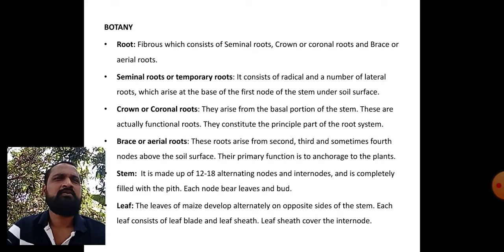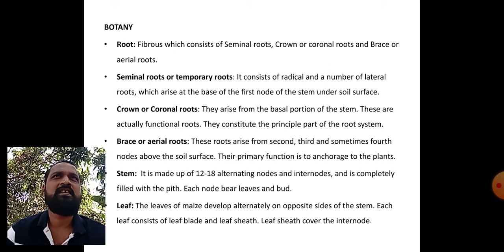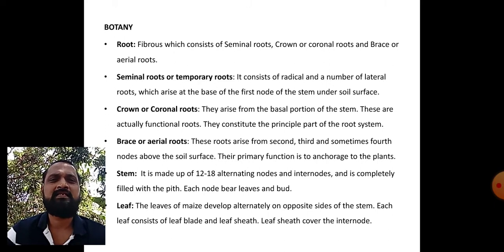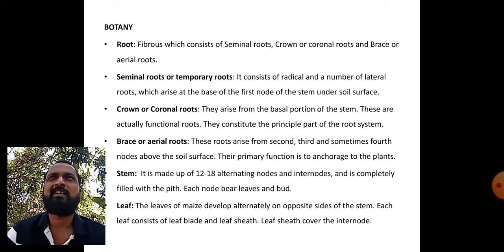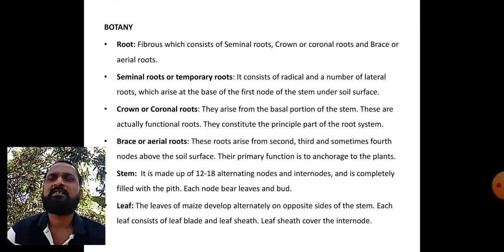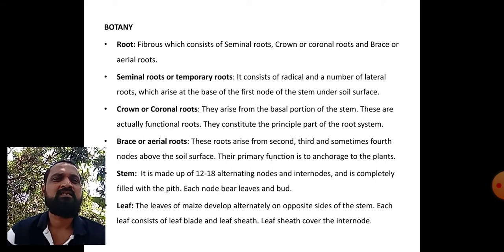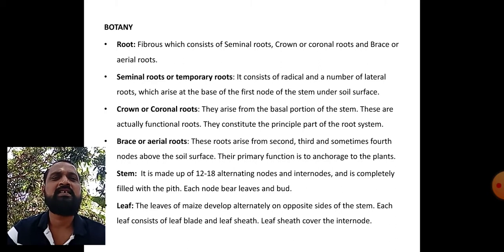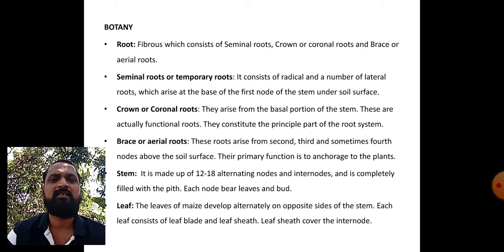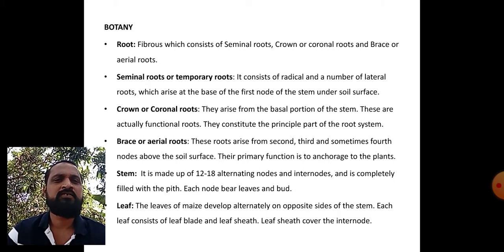As far as botany is concerned, the root system of maize consists of seminal roots, crown or coronal roots, and brace or aerial roots. Seminal roots consist of radicle and a number of lateral roots which arise at the base of the first node of the stem under the soil surface.